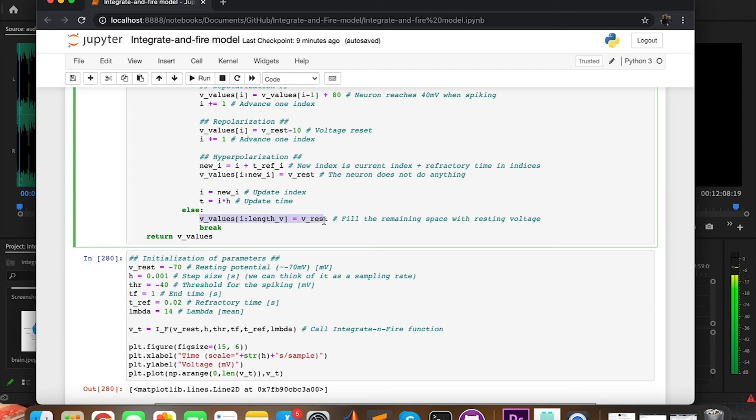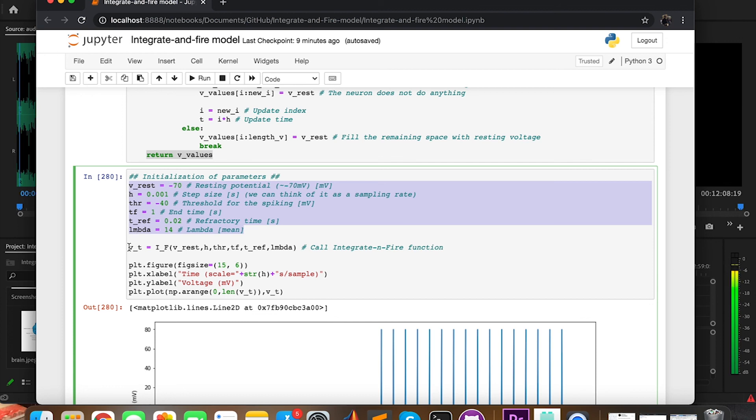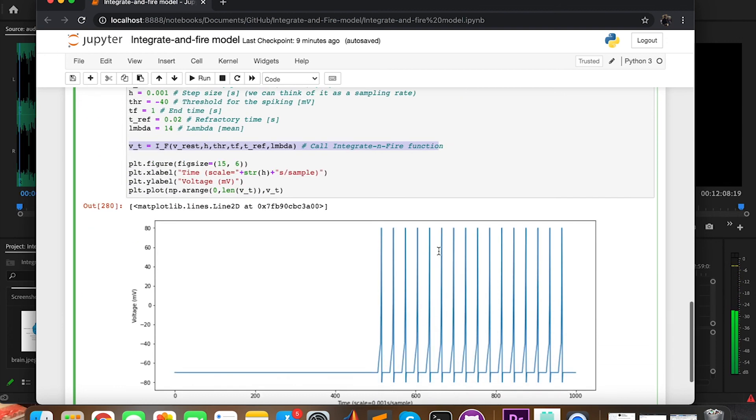Notice again that if we don't have space, we just fill the remaining space with the resting voltage, and return an array with voltages. So now we just want to call this function with the parameters of our choice, and plot the result. Et voila!